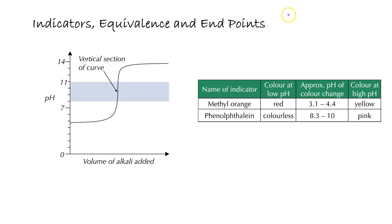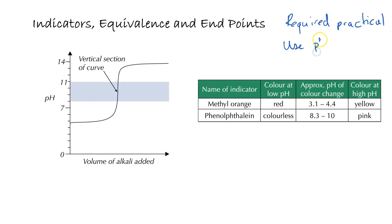This is a required practical, particularly for the A-level — required practical number 9 — which is to use a pH meter to measure a titration. From that you will check the pH at given volumes of either acid or alkali and be able to construct a pH curve.